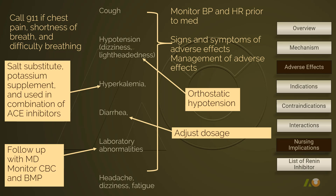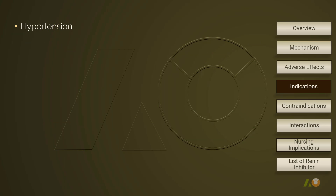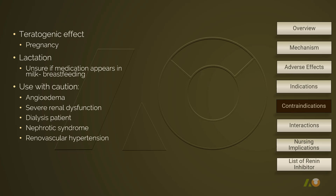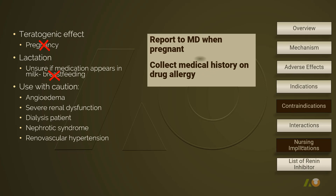The only indication for a renin inhibitor is hypertension. Medications directly affecting RAS should not be used in patients who are pregnant because of the potential harm to the developing fetus. The other contraindication for alaskirin is breastfeeding mothers. Renin inhibitors should also be used with caution in patients who have a history of angioedema, severe renal dysfunction, nephrotic syndrome, renal vascular hypertension, and patients who are on dialysis therapy. It is unknown how patients with significant renal dysfunction react to the therapy, so taking the medication with caution and monitoring is necessary.